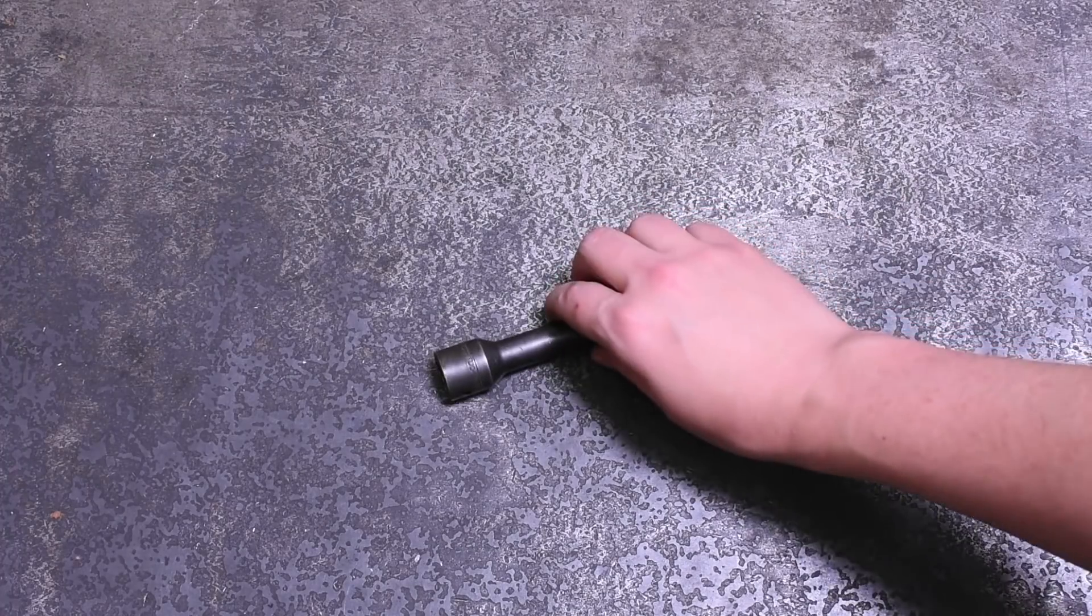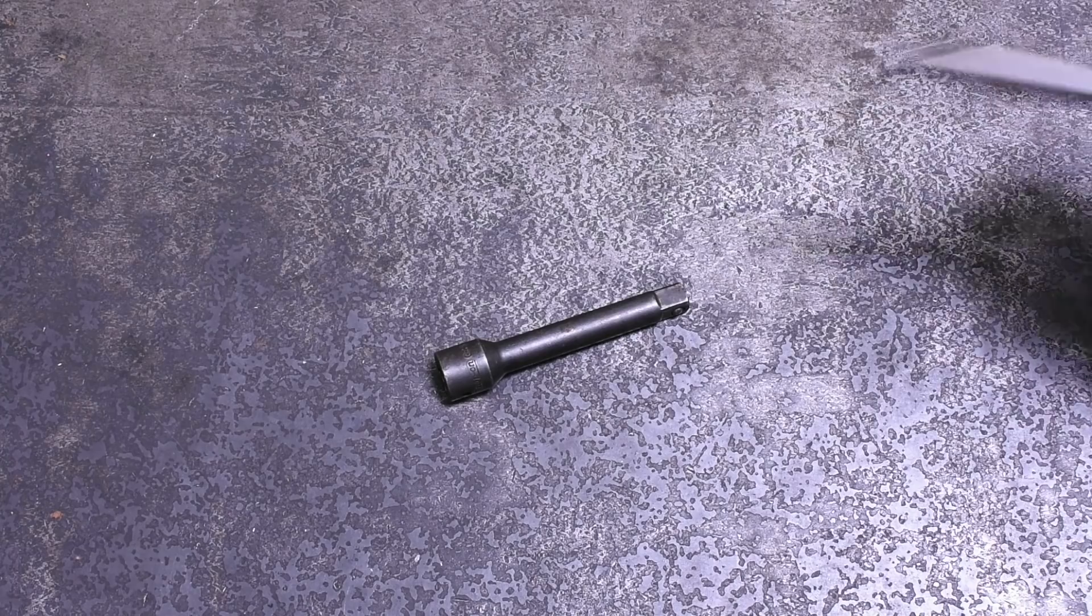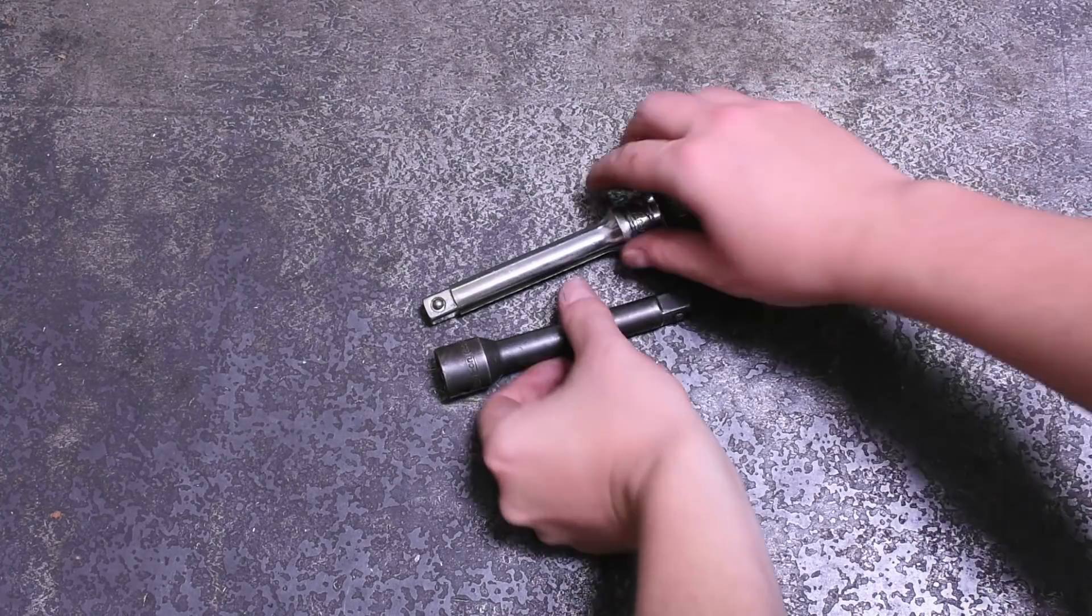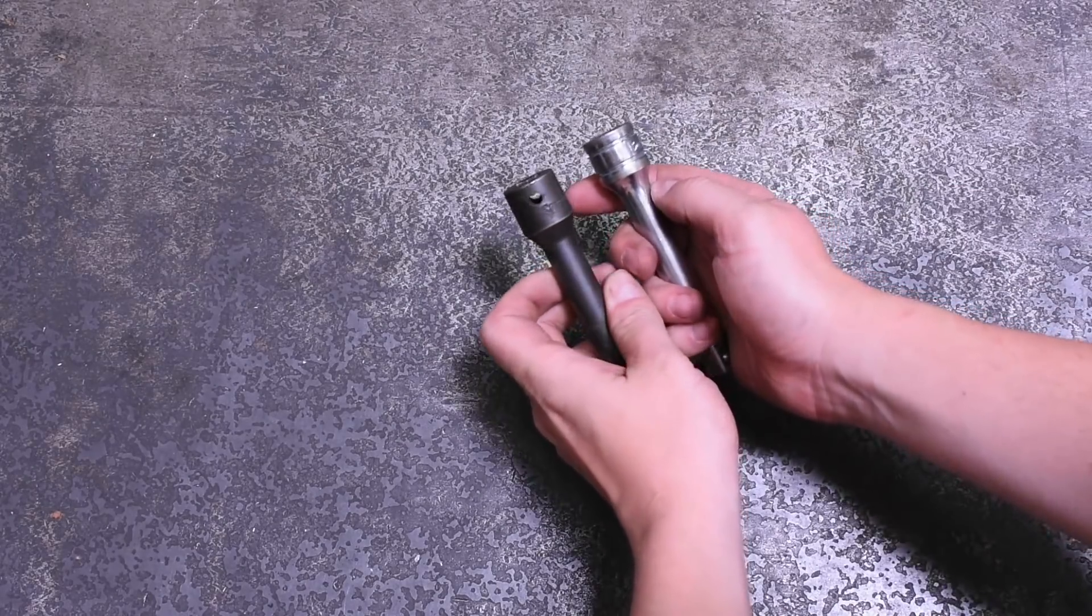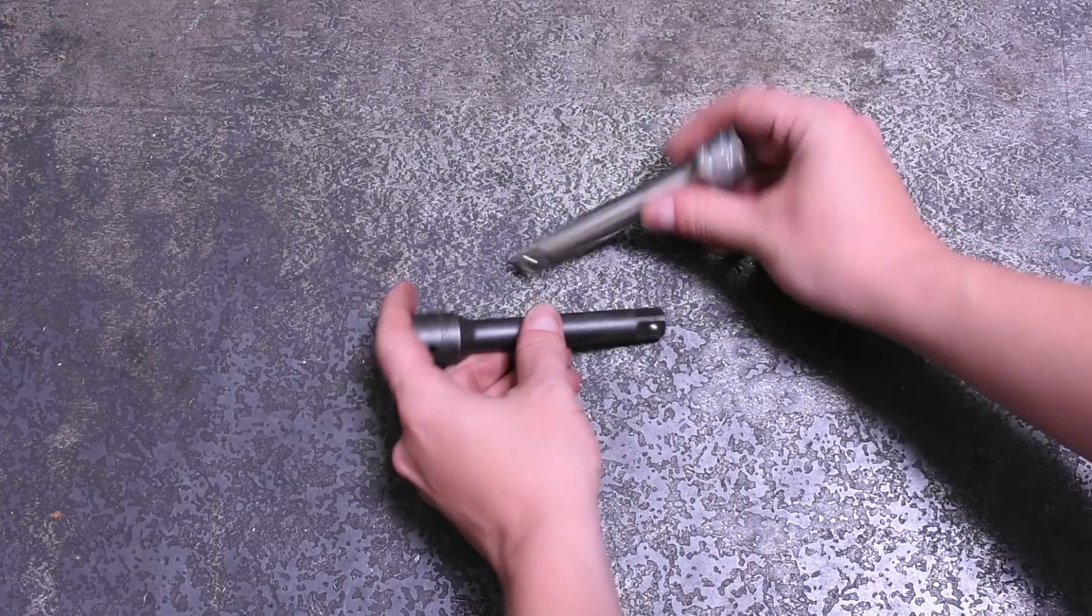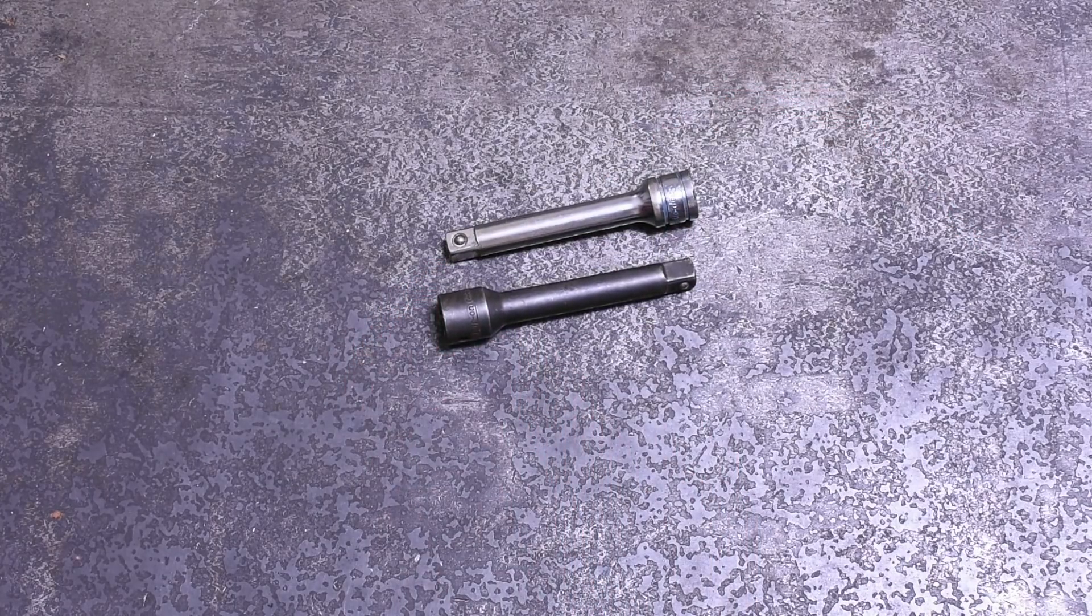So today we have a half inch drive five inch long impact extension from Snap-on, and a chrome five inch extension from Snap-on as well that we'll be impacting on. Both of these are our personal tools, so hoping this chrome extension doesn't explode like chrome tools sort of have a reputation for, whether that's earned or not.